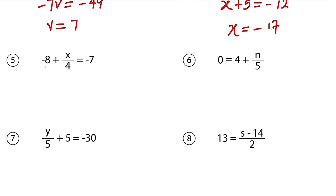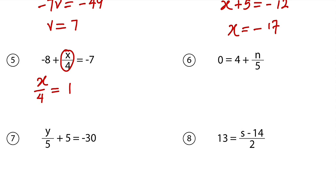Then another question. We have negative 8 plus a particular number. You have to group them together — both numerator and denominator. x divided by 4, you should consider it as a single value. Then this single value plus negative 8 is negative 7. Definitely that number must be 1, because negative 8 plus 1 is negative 7. So you set the whole of x divided by 4 to be equal to positive 1. Next, what number can be divided by 4 to get 1? That number must be 4, because 4 divided by 4 is 1. So x equals 4.